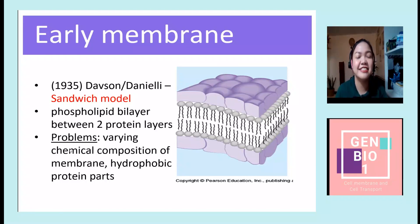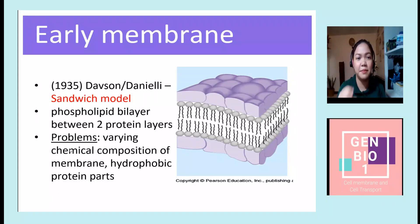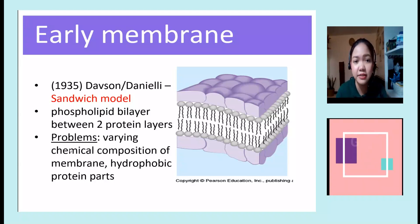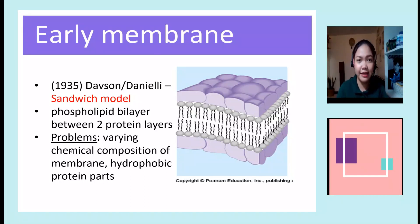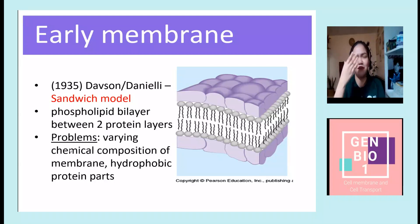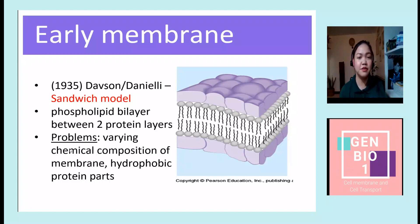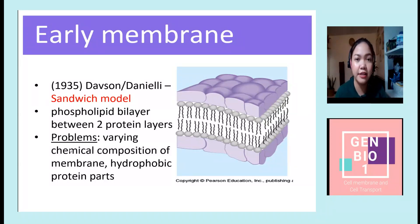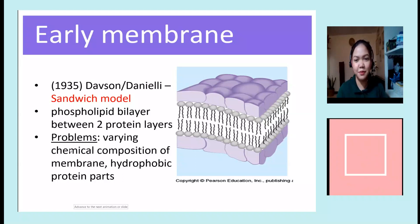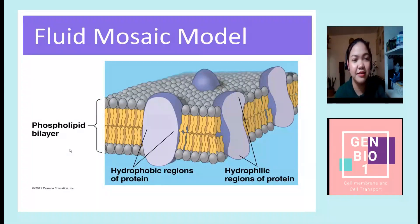But scientists found the sandwich model very problematic. First, because of the varying chemical composition of a membrane — each organism doesn't have the same membrane composition, so we can't say only certain things are present. Second, proteins are actually amphipathic, meaning they have hydrophobic and hydrophilic parts. If that's the case, the hydrophobic parts of the protein would be exposed to areas with water, which isn't possible. That's why they came up with the fluid mosaic model, which is what we use today.